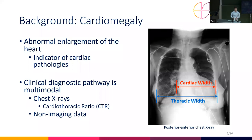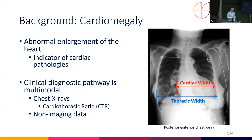A little bit of background on cardiomegaly first. Cardiomegaly is an abnormal enlargement of the heart. It's associated with a lot of different cardiac pathologies and is even an indicator of higher short-term mortality rate. The current clinical diagnostic pathway for cardiomegaly is multi-modal. A patient would usually have a posterior-anterior chest X-ray from which the radiologist can then extract the cardiothoracic ratio — defined as the ratio of the cardiac width to the thoracic width. A CTR over 0.5 is a major indicator of cardiomegaly.